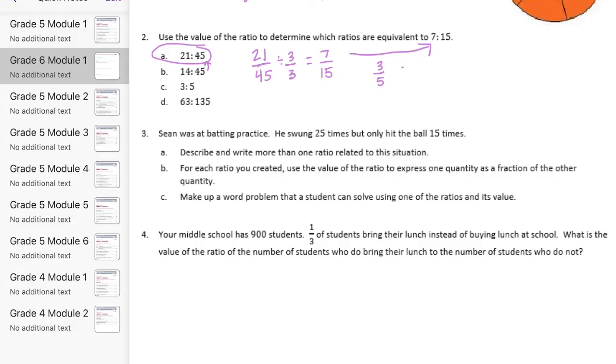So this, we need to see if there's any way it could equal 7 to 15. So if I multiply 5 times 3, I get 15. But if I do 3 times 3, I would get 9, not 7. So this one does not work either. And 63 to 135. So this we need to reduce also. I'm going to see if we can divide by 63. We can divide by 7 and 9. So let's see, 135, we can divide that by 9 I believe. So let's try dividing by 9. 63 divided by 9 is 7.